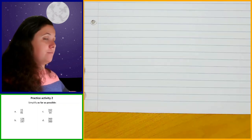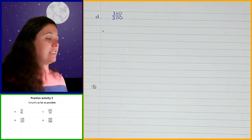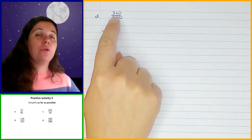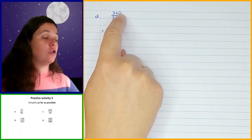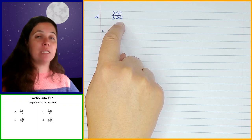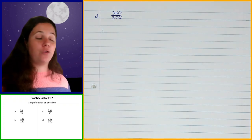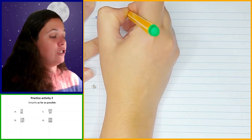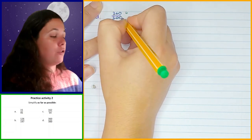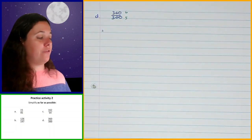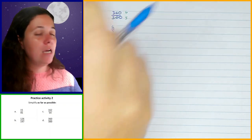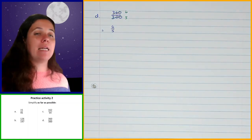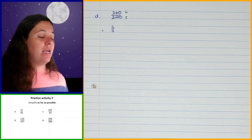Question D: 360 over 300. I can see that 60 goes into both of those numbers: 60 goes into 360 six times and into 300 five times, leaving me with 6 over 5. If you did that in more than one step that's absolutely fine — so long as you simplify as far as possible and arrive at 6 over 5.